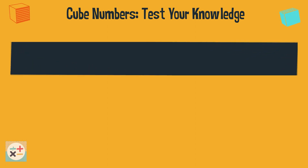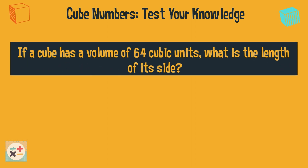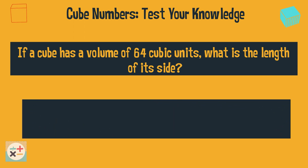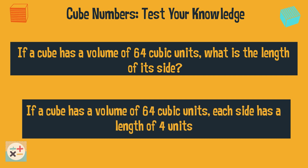Question 4. If a cube has a volume of 64 cubic units, what is the length of its side? If a cube has a volume of 64 cubic units, each side has a length of 4 units.